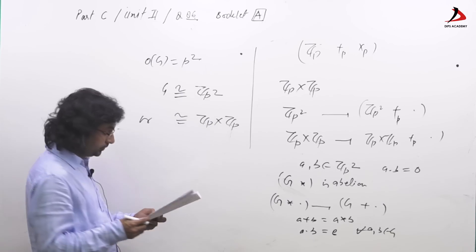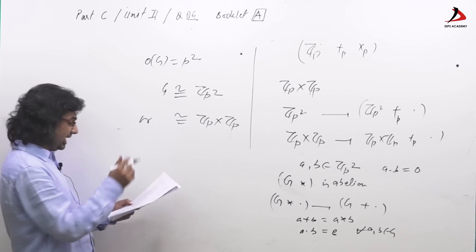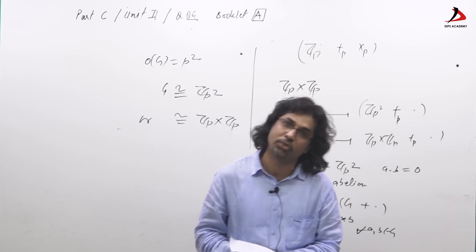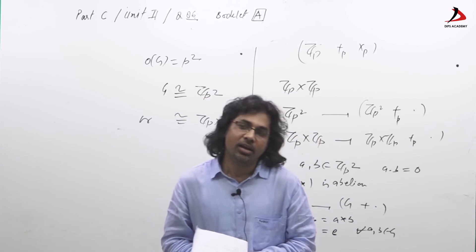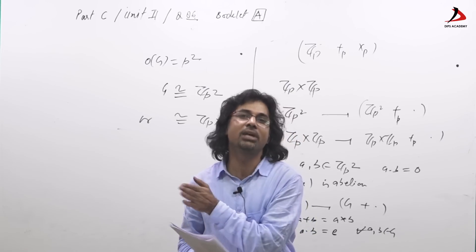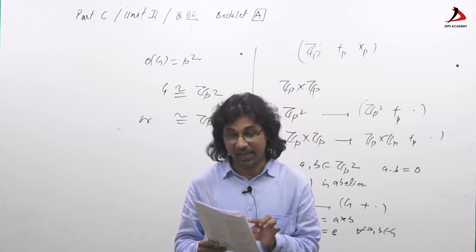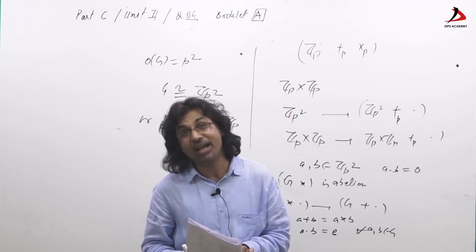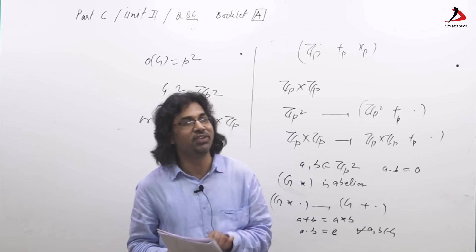About option four, they say there is exactly one integral domain of order P square or cardinality P square. As we know, any two finite field of same cardinality are isomorphic and every finite integral domain, every finite integral domain is field.